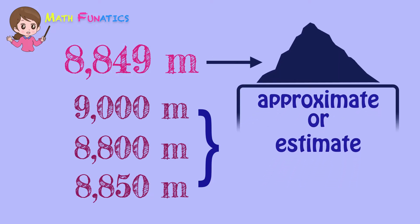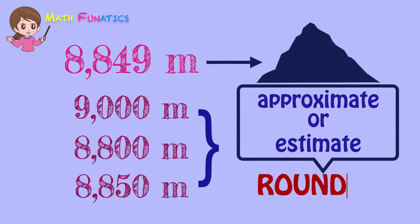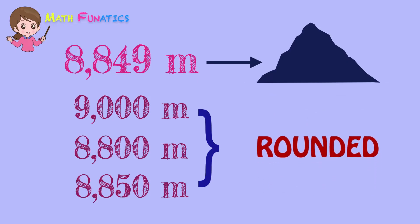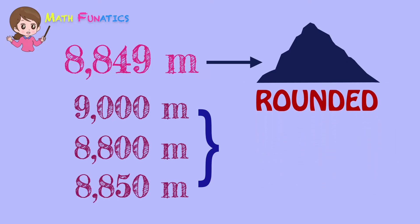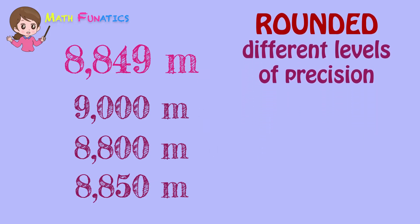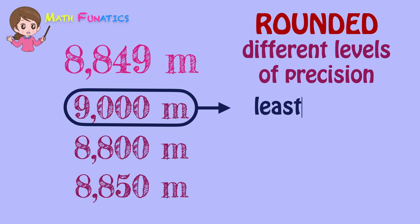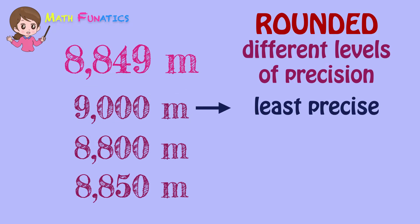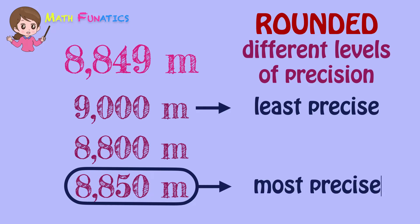Each of these values may be considered as an approximate or an estimate of the altitude of Mount Everest. These values may be referred to as the rounded values. These rounded values have different levels of precision. 9,000 meters is the least precise approximate, while 8,850 meters is the most precise one because it's the nearest value to the exact altitude.